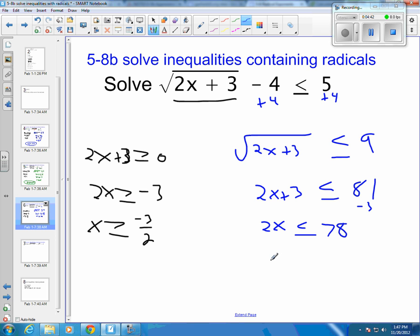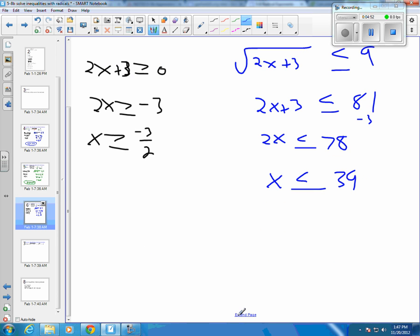And then you divide both sides by 2, so x is less than or equal to 78 divided by 2, which is 39. And so you've got a much larger range of answers here, so x has to be greater than or equal to negative 3 halves, or x has to be less than or equal to 39.